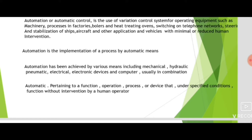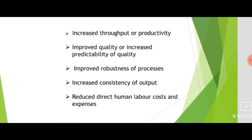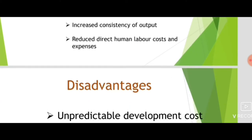Automation has been achieved by various means including mechanical, hydraulic, pneumatic, electrical, electronic devices and computers, usually in combination. Benefits of automation include: increased throughput and productivity, improved quality and predictability of quality, improved robustness of processes, increased consistency of output, and reduced direct human labor costs and expenses.